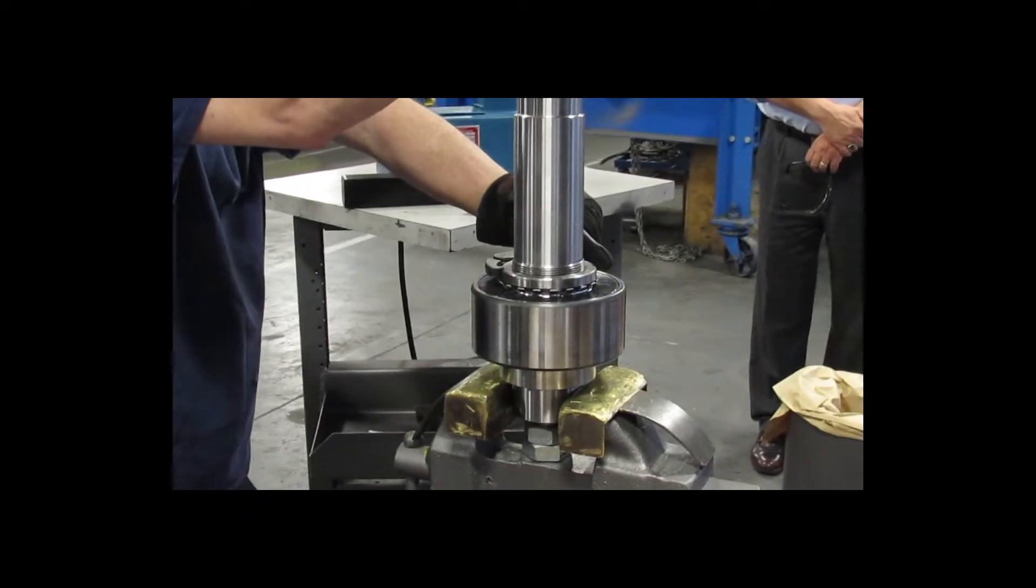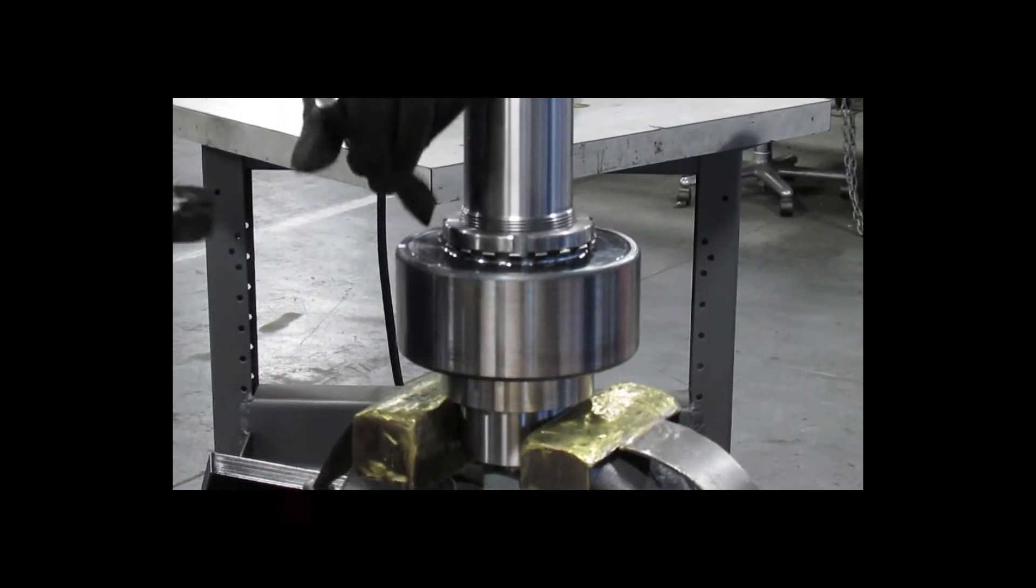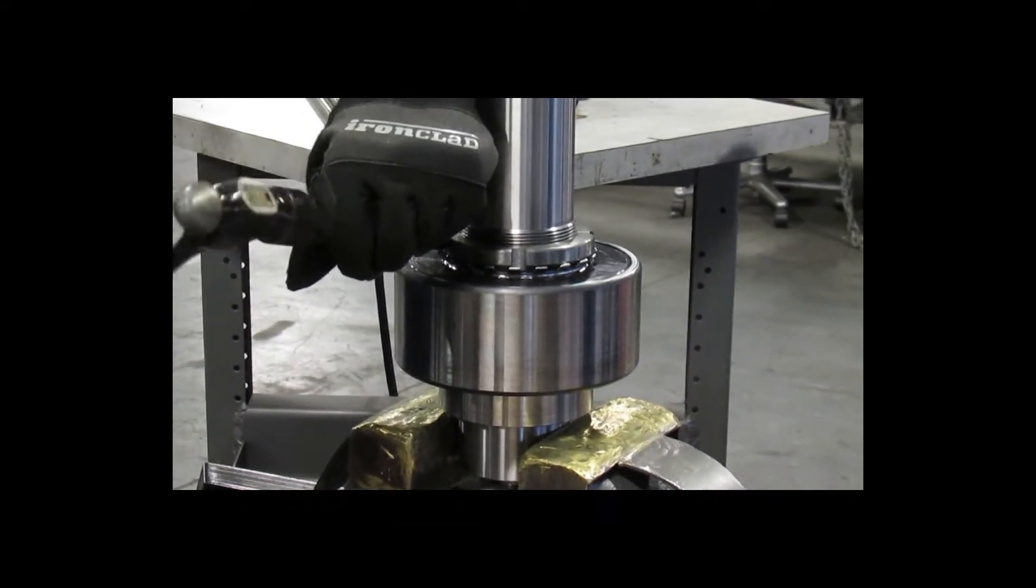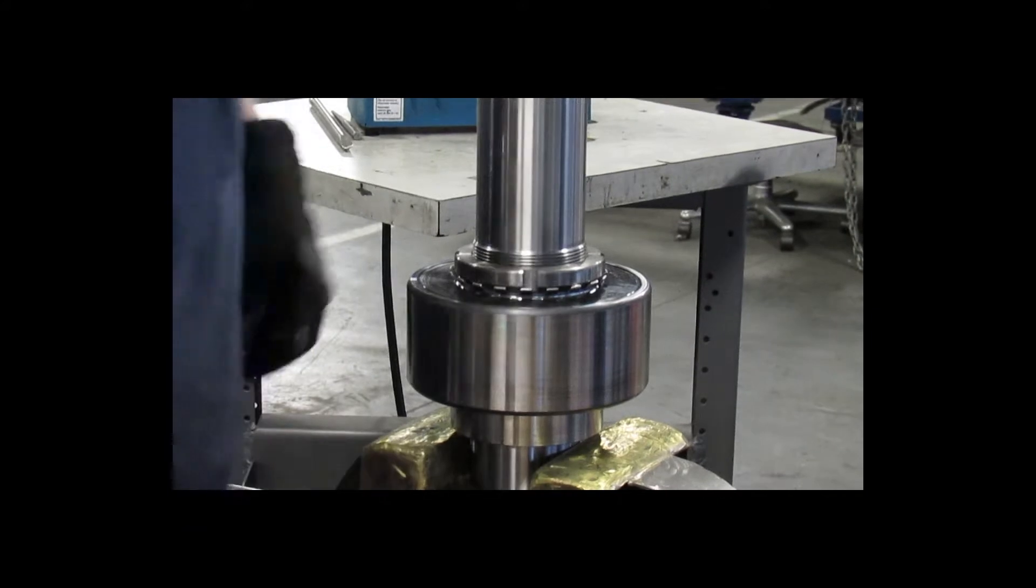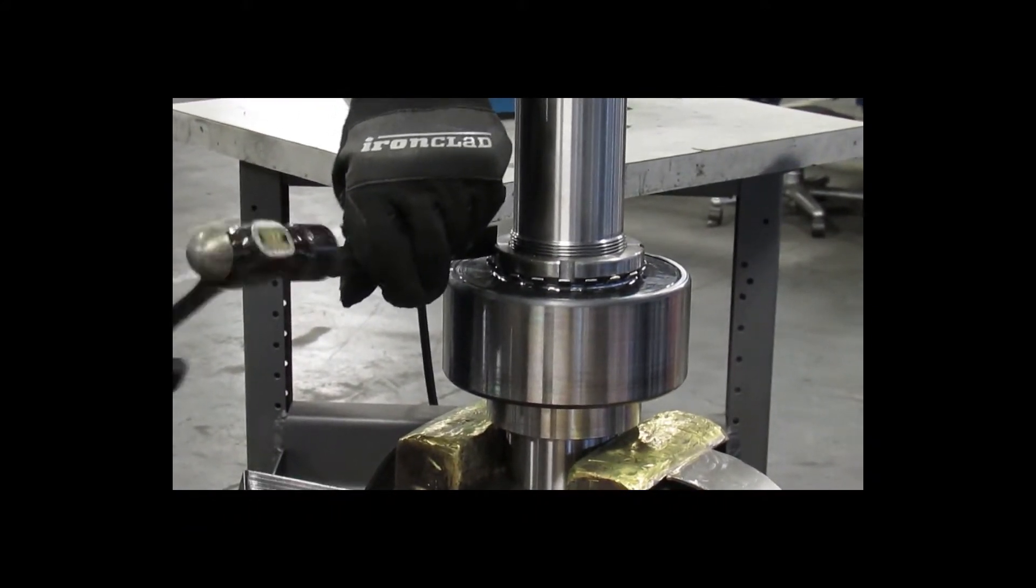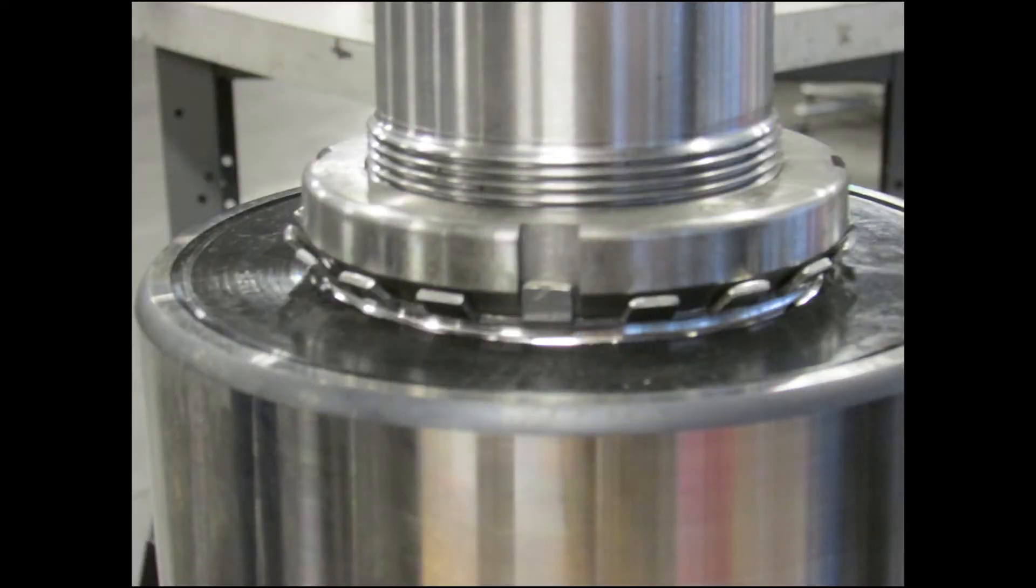Often times, it is necessary to use a spanner to secure the lock nut. When one of the tabs on the lock washer is aligned with an opening on the lock nut, a drift and a hammer can be used to knock the tab into the opening, securing the lock nut.